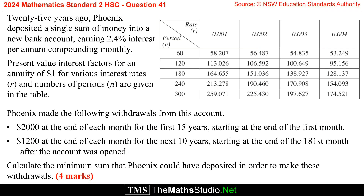Question 41. 25 years ago, Phoenix deposited a single sum of money into a new bank account, earning 2.4% interest per annum compounding monthly. Present value interest factors for an annuity of $1 for various interest rates R and numbers of periods N are given in the table.